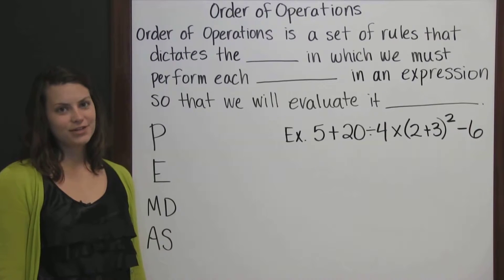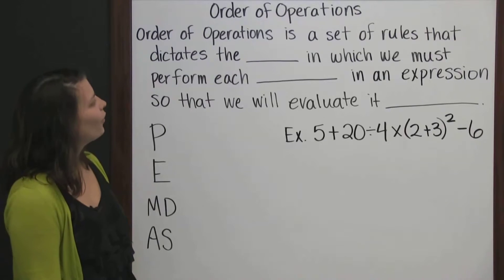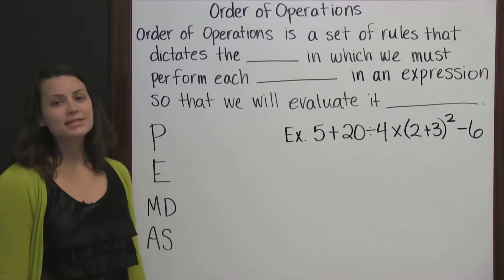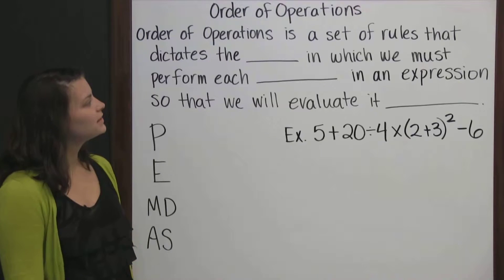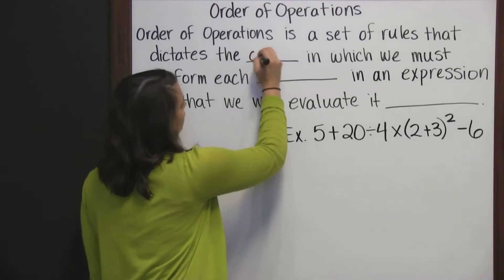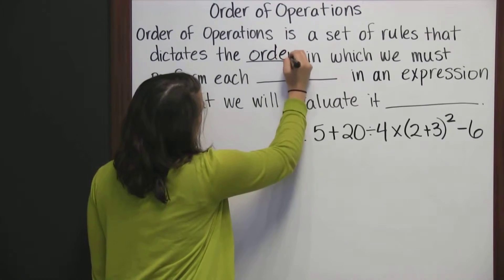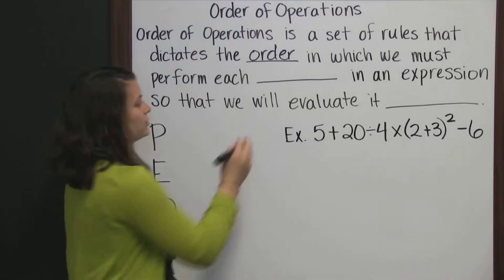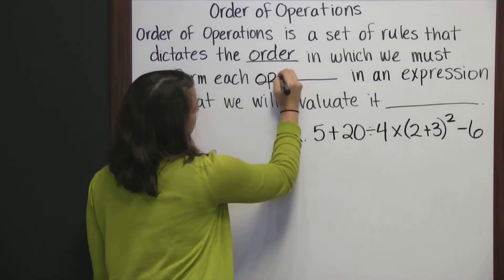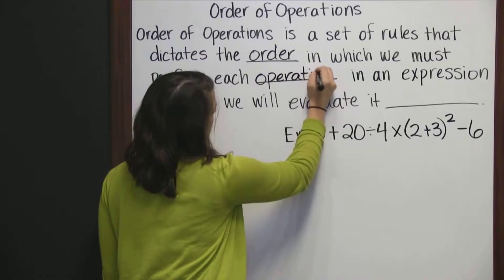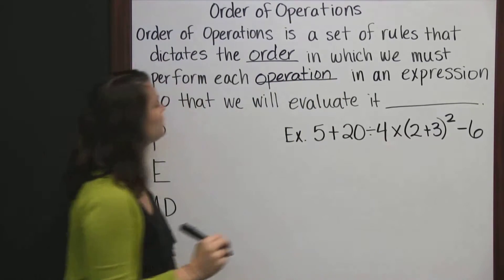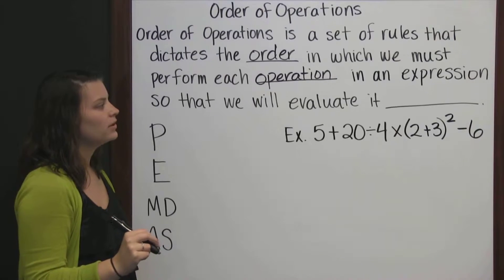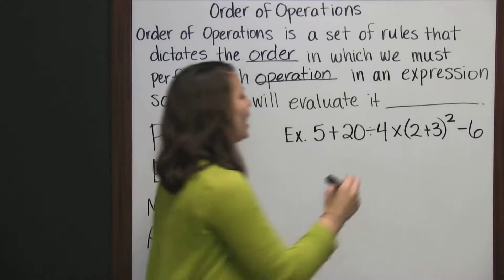Order of operations. Order of operations is a set of rules that dictates the order in which we must perform each operation in an expression so that we will evaluate it accurately.